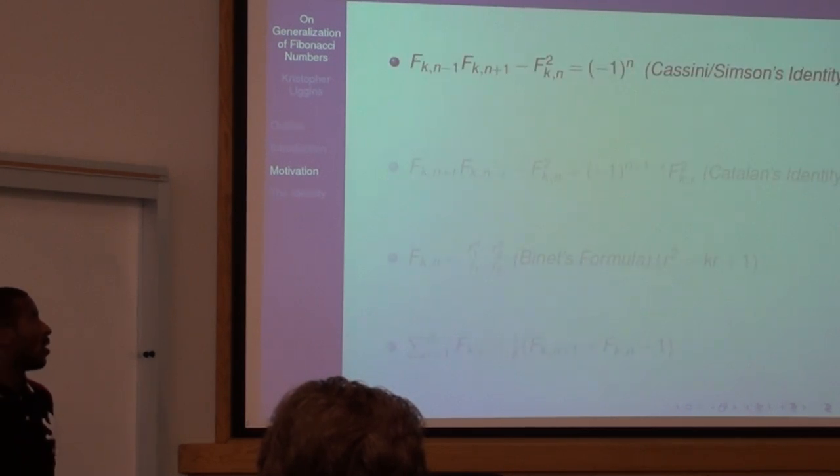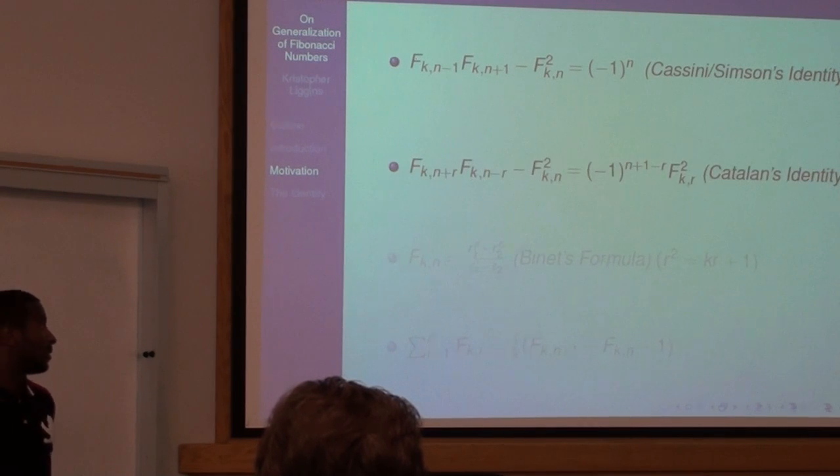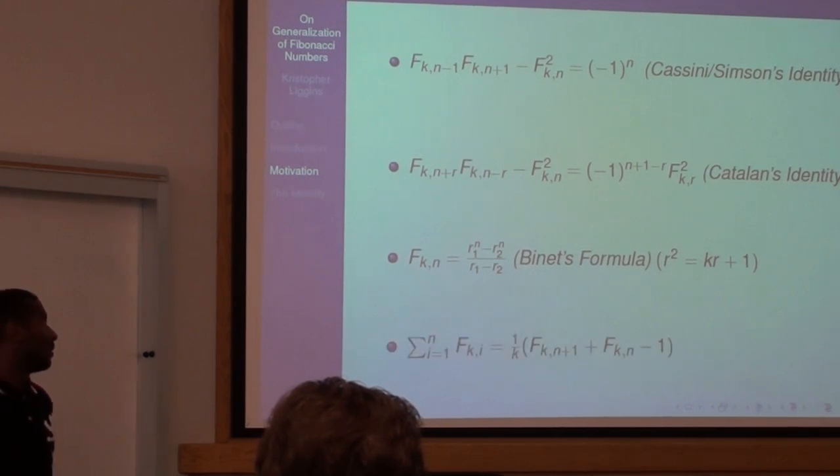Also, there are k-Fibonacci identities, just like the Fibonacci identities, which are regular Fibonacci identities, but they also have one for k-Fibonacci. The Catalan identity, where roots squared equals k-Fibonacci numbers, and the sum of the first n terms are the k-Fibonacci numbers.